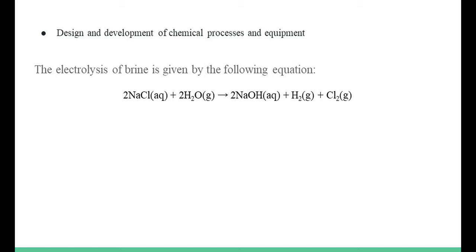By far the largest part, about 95% of the chlorine produced globally, is obtained via the chloralkali process. This method is based on the electrolysis of brine, a concentrated aqueous solution of sodium chloride. The stoichiometric equation for this process is the one we can see in the slide.